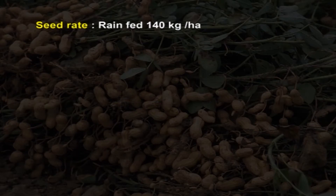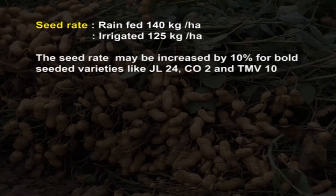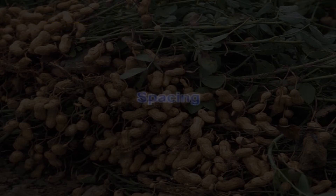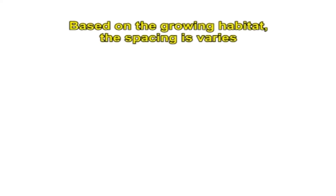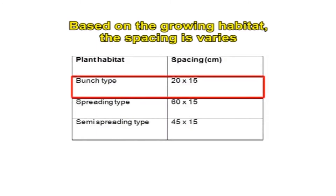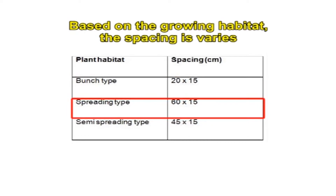The seed rate for rain-fed crop is 140 kg per hectare and for irrigated crop is 125 kg per hectare. The seed rate may be increased by 10 percent for bold-seeded varieties like JL 24, Co 2 and TMV 10. Based on the growing habit, spacing varies: for bunchy type, the spacing is 20 x 15 cm; for spreading type, 60 x 15 cm; and for semi-spreading type, 45 x 15 cm.